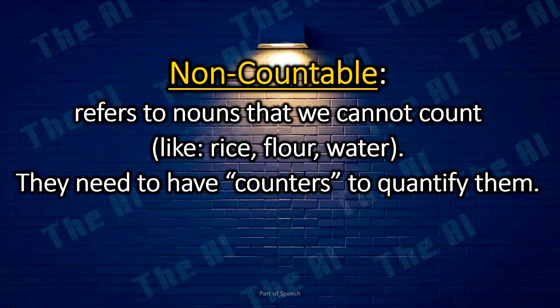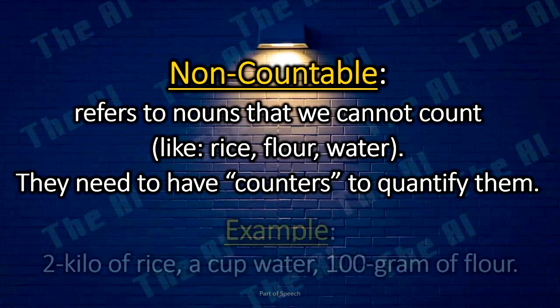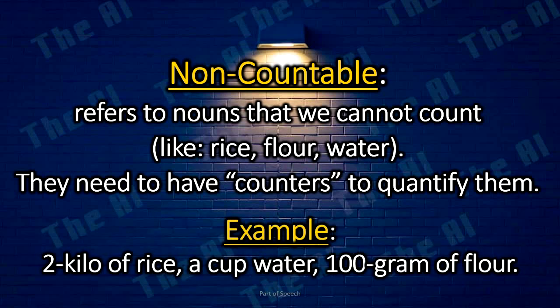Non-countable nouns refer to nouns that we cannot count, like rice, flour, water. They need to have counters to quantify them. Examples: two kilos of rice, a cup of water, 100 grams of flour.